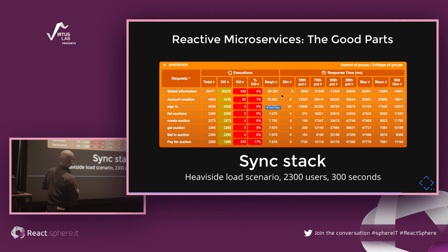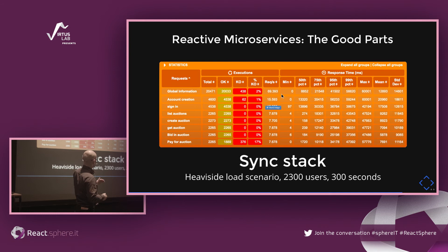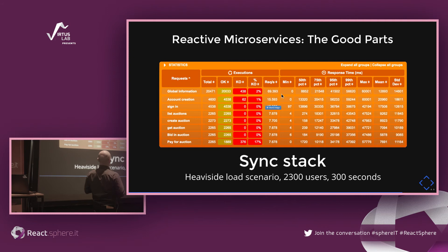Looking at the Scalatra endpoints: identity is not coping as expected. For the auction house endpoints, the 50th percentile is quite okay, but then things get really rough at the 75th percentile — we get two orders of magnitude more latency. This is the point at which we hit the thread pool: this is the moment when queuing really hits you.